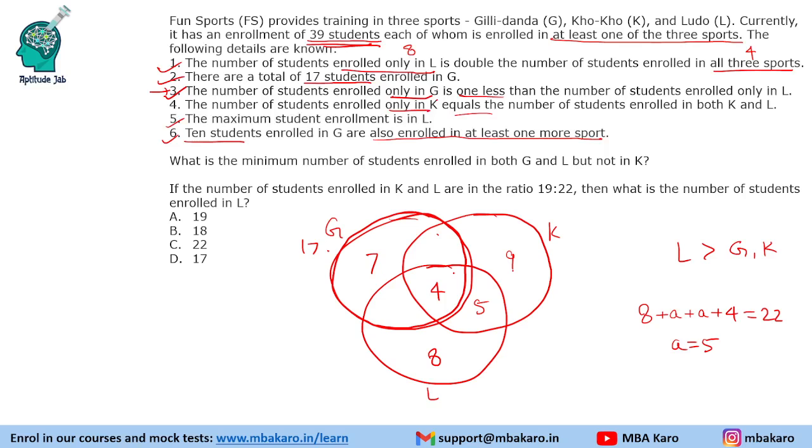So we can put these values also in the Venn diagram: 4 and 9 only in K. So this is how we will make the Venn diagram. Now, the first question is what is the minimum number of students enrolled in both G and L but not in K. G and L but not in K, and we need to find the minimum such number. Now we cannot find these two values. We know that they add up to 6. So we need to find the minimum number of students enrolled in both G and L but not K.